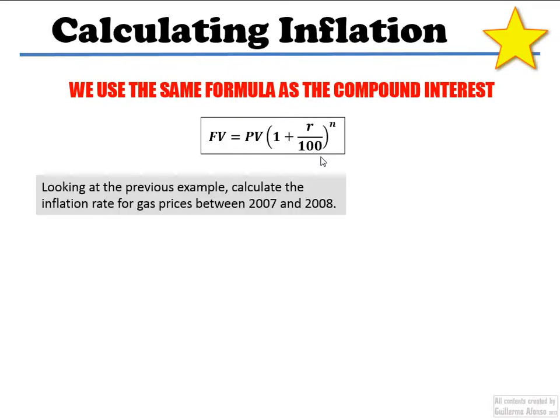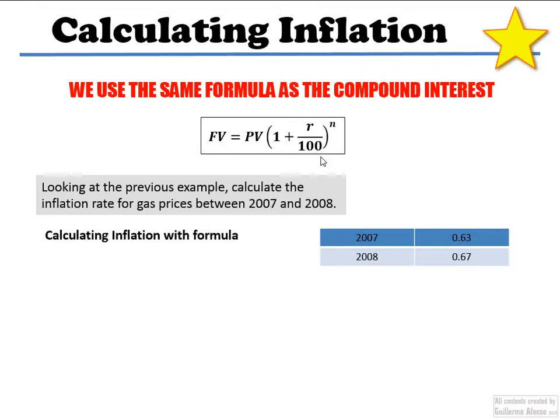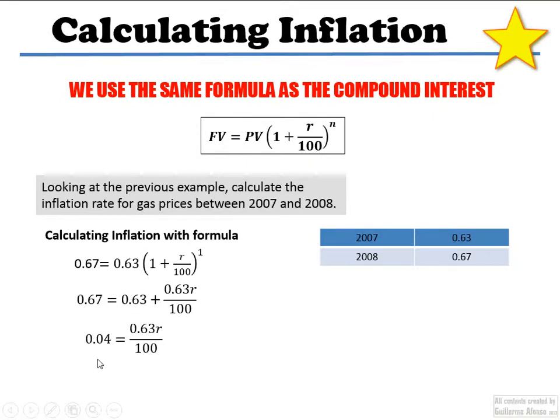I can look at the previous example, 2007 and 2008. You figure out and just fill it up with the formula. I have the present value, I have the future value, and all I have to do is just one year and a half in between. The only thing I have to do is clear for R. So the 0.63 goes subtracting to the other side. And now I just have to multiply the 100 and divide by 0.63 to get 6.34%.